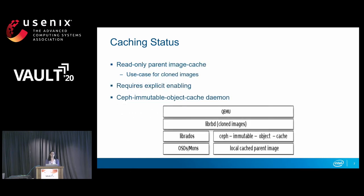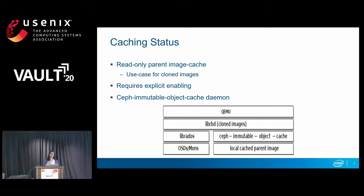RBD also has a recent implementation called the shared read-only parent image cache. The main use case is for RBD cloned images — a lot of images cloned from a similar parent initially only access common portions of the parent image, so it makes sense to have a local copy stored. This cache does that: it caches a local copy of the parent image and enables clone images to read from it, improving read I/O speed and reducing cluster network traffic. This requires explicit enabling in the Ceph config file and is handled by the Ceph immutable object cache daemon.